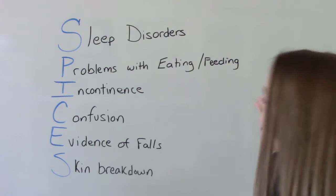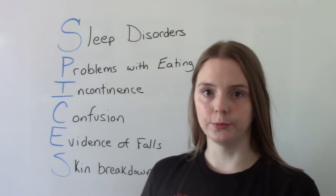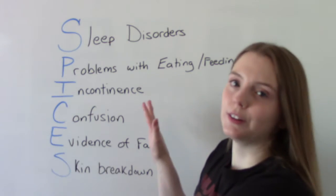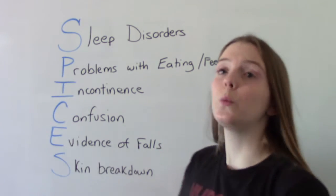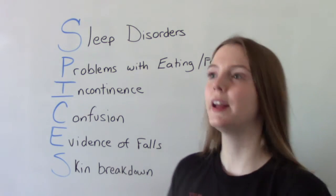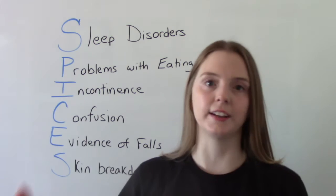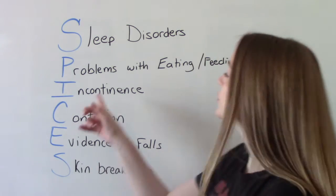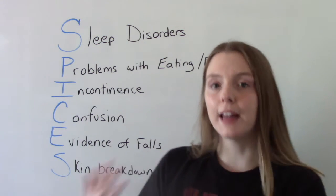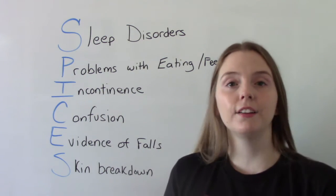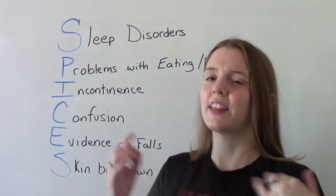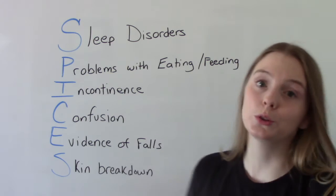I is for incontinence — bowel and bladder. I want to make this very clear: it is not normal to be incontinent. Incontinence is not a normal thing to happen with age. So we screen our patients for incontinence, bowel or bladder. When talking about bladder specifically, we identify what kind of incontinence it is — is it stress incontinence, is it urge incontinence? — and ask those questions accordingly.